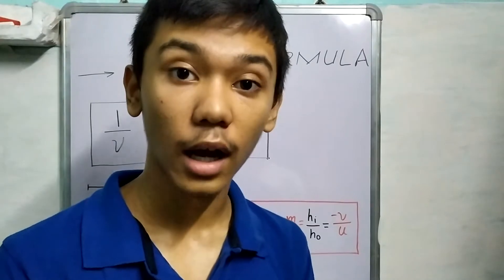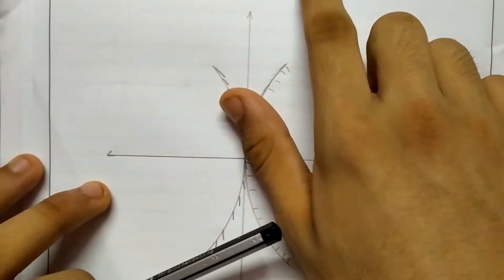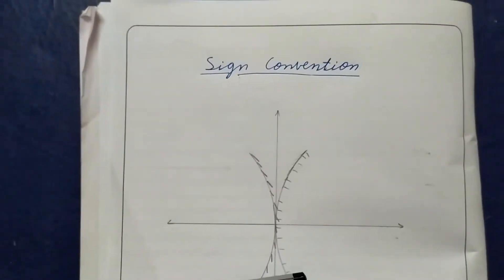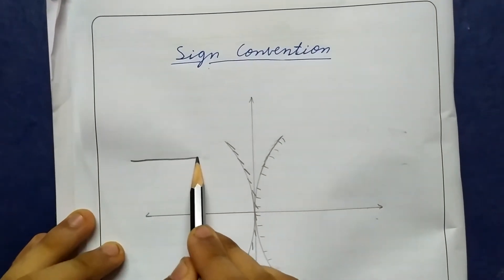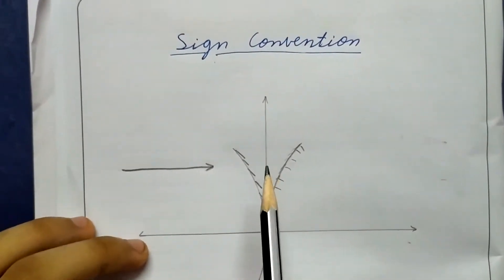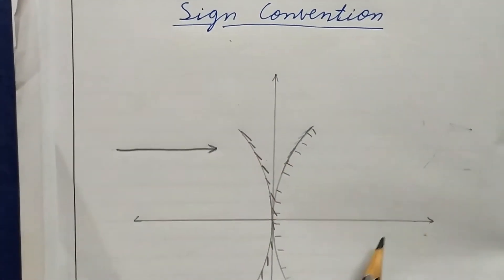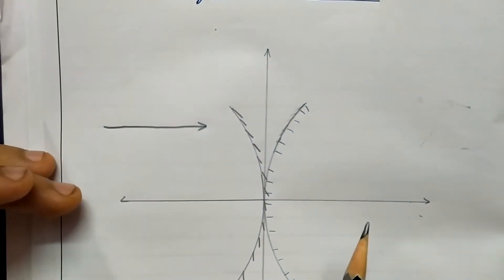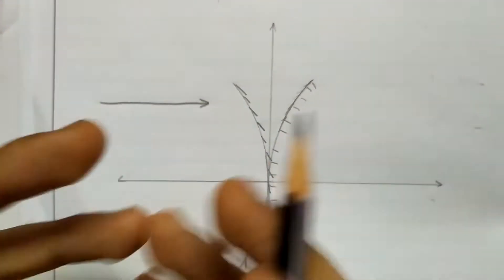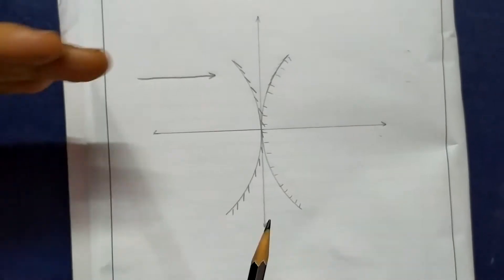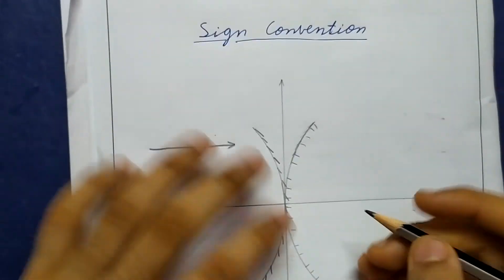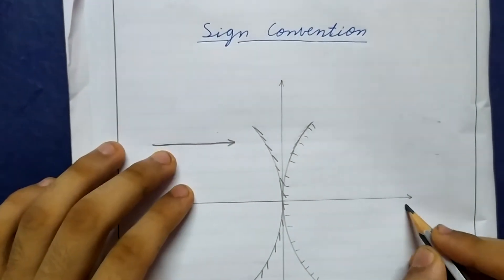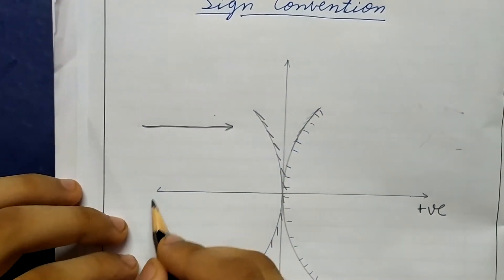We will see how to use the mirror formula and, more importantly, how to derive it. First we will study the sign convention when we deal with mirrors. The convention is that the direction in which a light ray enters — the incident direction — is considered to be positive. If a light ray comes from left to right, this side is negative and this side is positive.